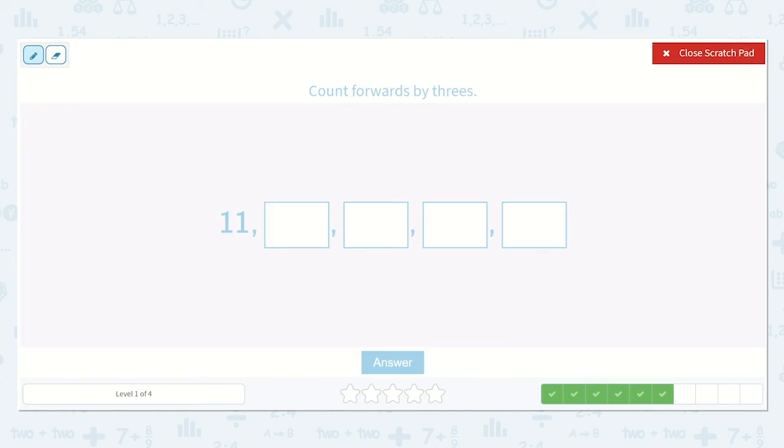Let's count forward by threes. 11, 12, 13, 14, 15, 16, 17, 18, 19, 20, 21, 22, 23.